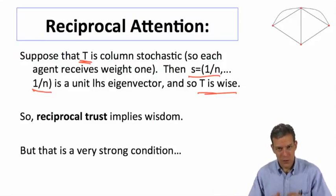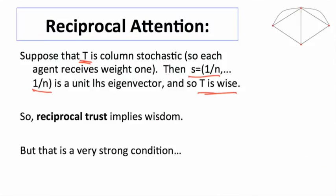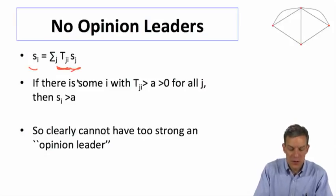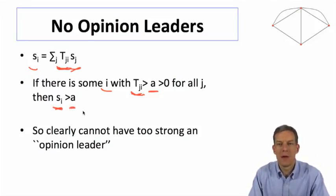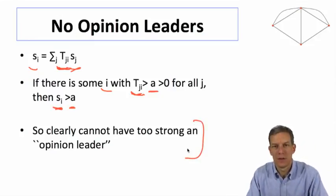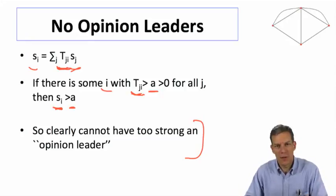That's a very strong condition, though. Generally in society, we're going to have some heterogeneity in terms of overall how much somebody gets paid attention to. What's important is that when we're looking at this, there's no single individual that's getting too much of the weight from other individuals who matter. So if there was some i that had, for instance, everybody putting weight at least a on them, then their overall influence would be at least a. So there can't be anybody who gets too much attention. So you can't have too strong an opinion leader. That's going to be an obvious condition. If anybody is getting too much weight in, their eventual belief is going to influence society.